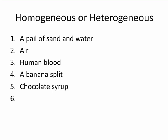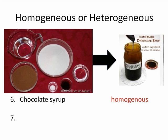Chocolate syrup — homogeneous or heterogeneous? Chocolate syrup is made up of molecules such as water, sugar, cocoa, and salt. Other homogeneous mixtures such as vanilla extract, corn syrup, and other flavorings also make up the ingredients for chocolate syrup. Chocolate syrup is a homogeneous mixture.